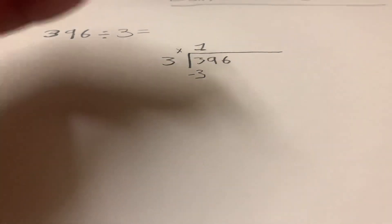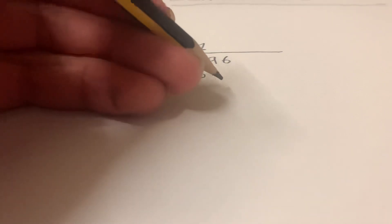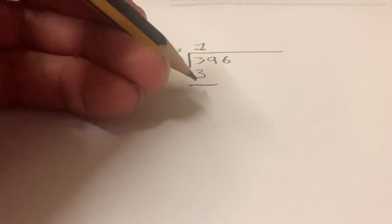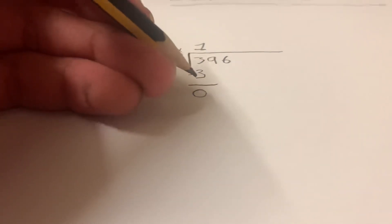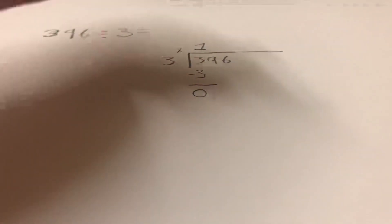Then you're going to subtract three, take away three, which equals zero. After you've done that, you're going to bring down the nine.